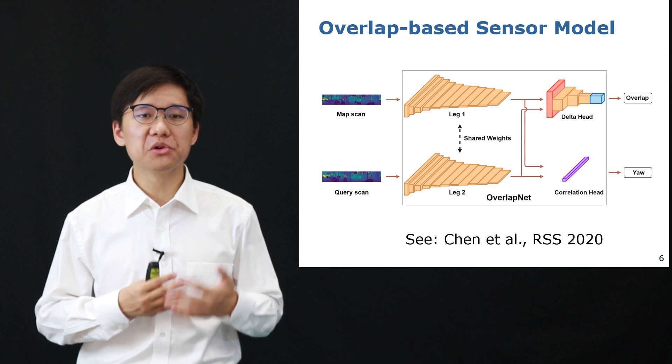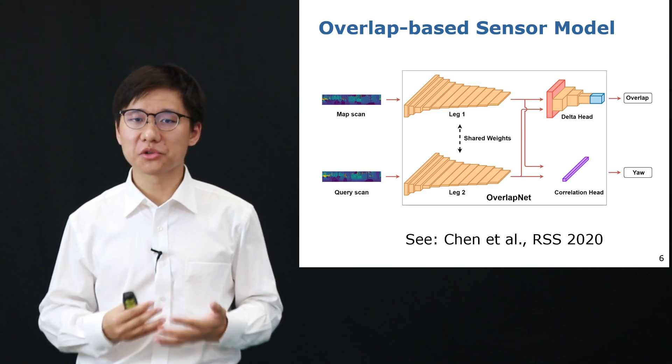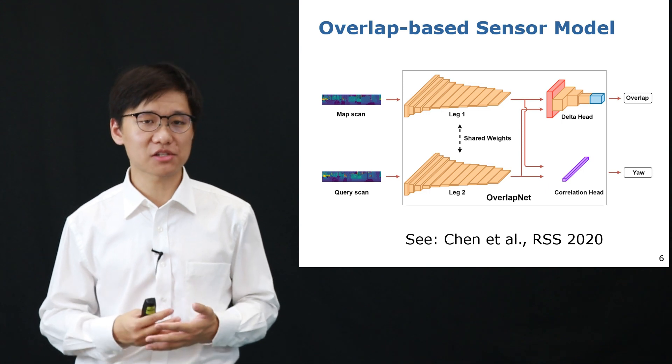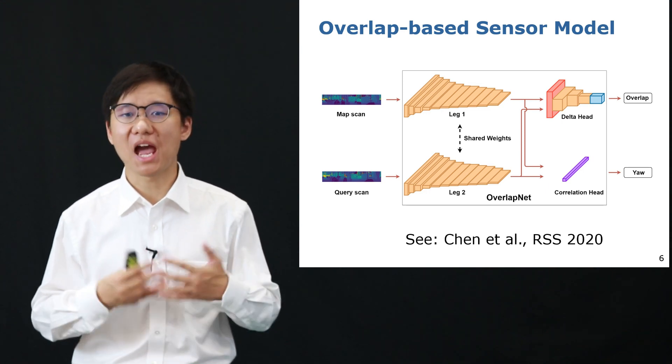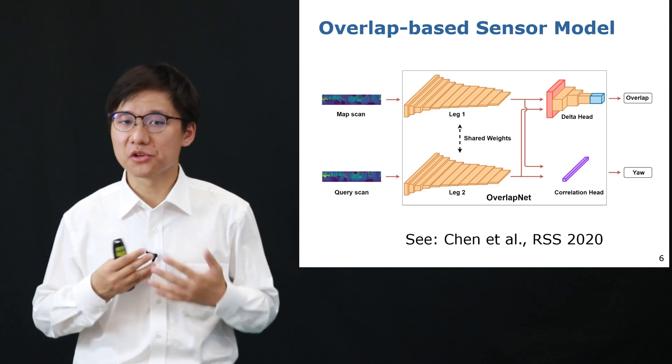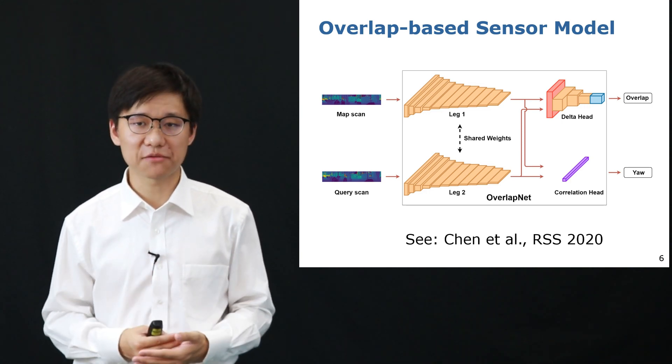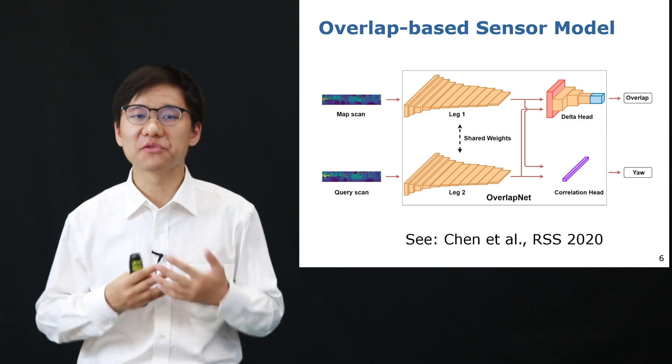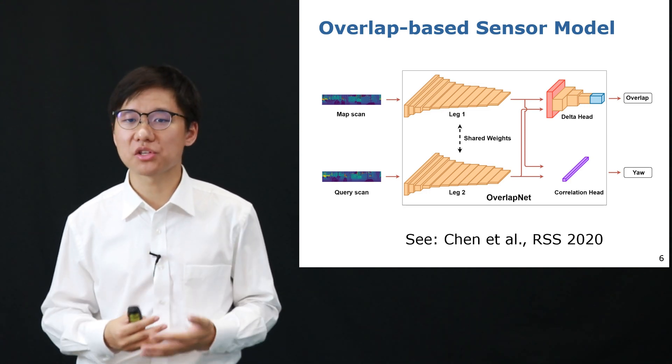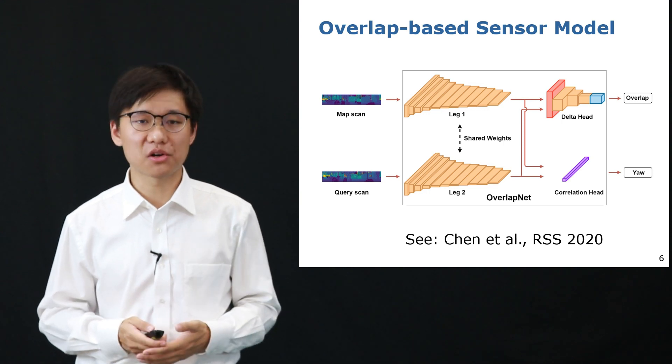In this work, we built a new sensor model for Monte Carlo localization based on the overlap and relative yaw angle estimates between the query frame and the map frame. The query frame is generated from the LiDAR scan what we currently have. And the map frame is a virtual frame generated from the map given the position of the particle and the pre-built model of the environment.